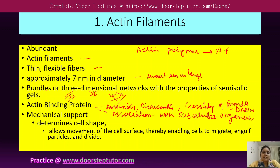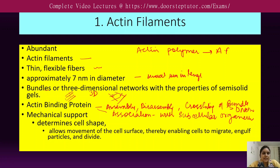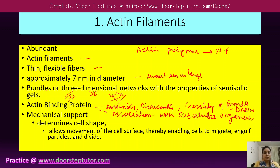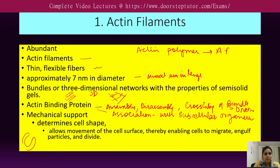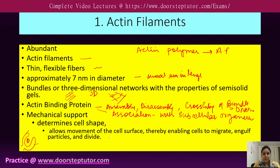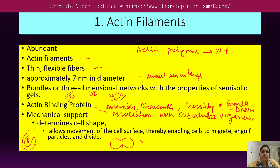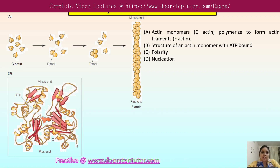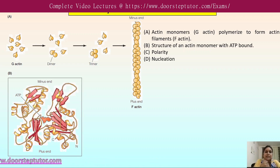Actin filaments are abundant beneath the plasma membrane, where they form an intrinsic network that helps determine the shape of the cell. They allow movement at the cell surface and enable the cell to engulf food particles — as seen in endocytosis, where the plasma membrane forms protrusions against food particles, which is only possible with the help of actin filaments. They also help in cell division, where the cell first elongates and then divides in the middle.